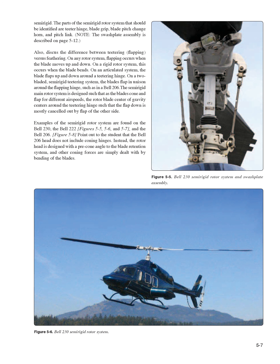On a rigid rotor system, flapping occurs when the blade bends. On an articulated system, the blade flaps up and down around a teetering hinge. On a two-bladed semi-rigid teetering system, the blades flap in unison around the flapping hinge, such as in a Bell 206. The semi-rigid main rotor system is designed such that as the blades cone and flap for different airspeeds, the rotor blade center of gravity centers around the teetering hinge. Examples of the semi-rigid rotor system are found on the Bell 230, the Bell 222, and the Bell 206. The Bell 206 head does not include coning hinges; instead, the rotor head is designed with a pre-cone angle to the blade retention system, and other coning forces are dealt with by bending of the blades.